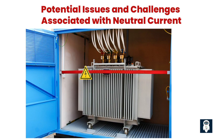2. Voltage imbalance and quality issues. Another challenge posed by neutral current is voltage imbalance. When the neutral current is not properly distributed among the phases, it can create voltage imbalances and affect the quality of the electrical supply. This can cause equipment malfunctions, flickering lights, and other electrical issues, making it crucial to address this problem promptly.